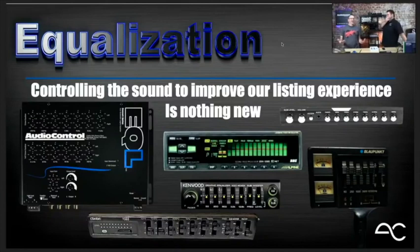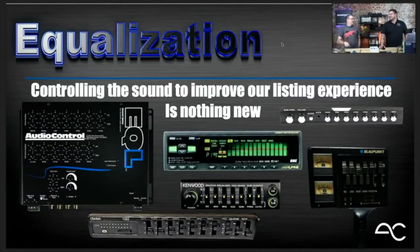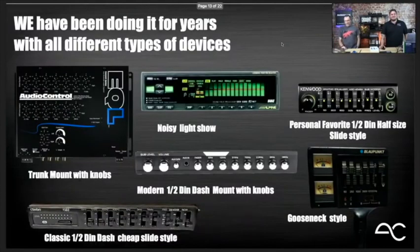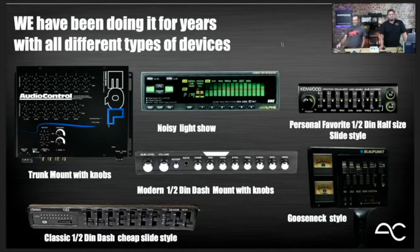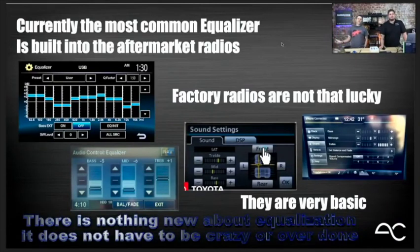There were gooseneck EQ users — if you set yourself up a whole command center with a gooseneck with an EQ, double goosenecks, you're like a pilot. We have been doing equalization for years with all these different devices: trunk mounts, noisy light shows, Haflers, goosenecks, and tiny units. Currently, the most common equalizer is built into the aftermarket radio. A lot of those standalone units disappeared because it became easier to just build it into the radio.